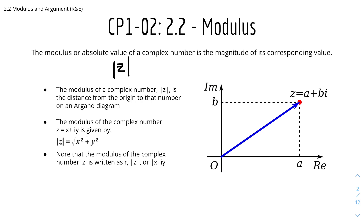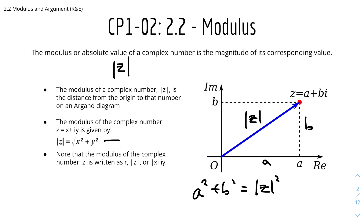The modulus of the complex number z equals x plus iy is given by the modulus of z equals the square root of x squared plus y squared. This is basically the Pythagoras theorem, because if you look at the diagram, the complex number z equals a plus bi, where this distance is a and this distance is b. The modulus is basically a squared plus b squared equals the modulus of z squared, and therefore the modulus of z equals root a squared plus b squared.